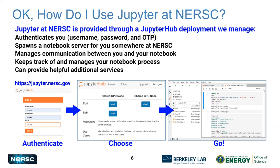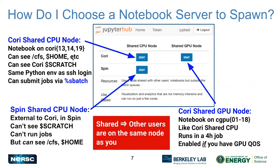On the shared CPU nodes on Cori, you can see all file systems — community file system, home directory, and Cori scratch — and interact with any data there. It's the same Python environment as if you logged in via SSH, and you can submit jobs and interact with batch queues using slurm magic or shell magics. The Spin shared CPU node is a backup option if Cori is down: it's external to Cori, cannot see Cori scratch, and you can't run jobs from it, but you can see the community file system and home directory.